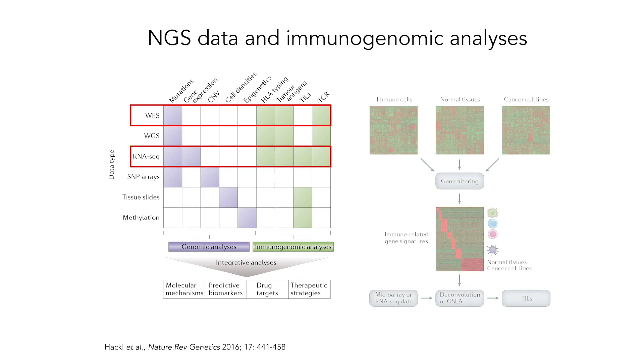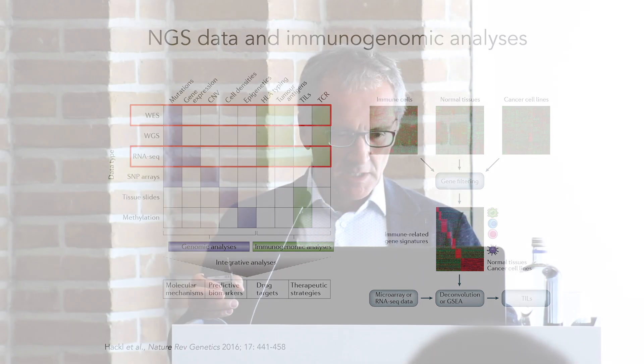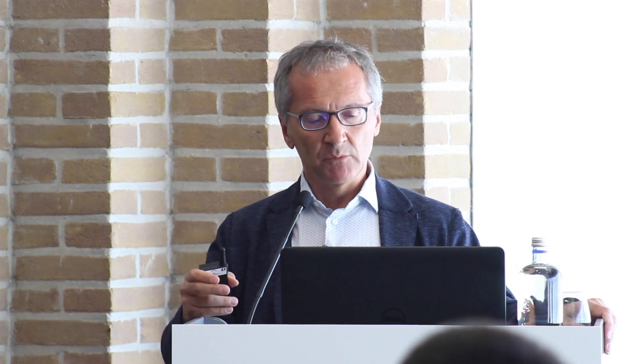One example of how you can do this: you collect a number of expression profiles from purified immune cells, then also from normal tissue and cancer cell lines. Then you filter these genes, and you have a set of genes which are more or less related to specific immune cell populations, and then you can use either deconvolution or gene-set enrichment analysis to estimate the TILs.